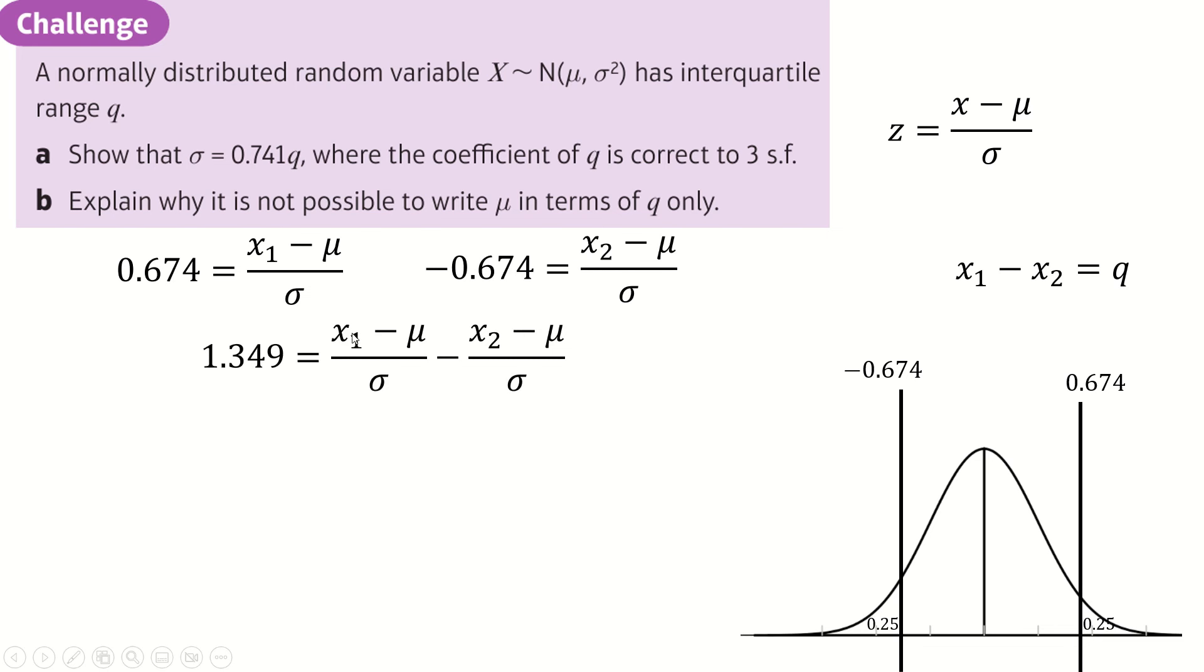And then all of this cancels except for X1. You just end up with an X1 minus X2. Obviously, with the sigma one bottom times by sigma, this becomes Q. And then if you divide or times by sigma and then divide by 1.39, you'll end up with what they wanted you to get, which is good.